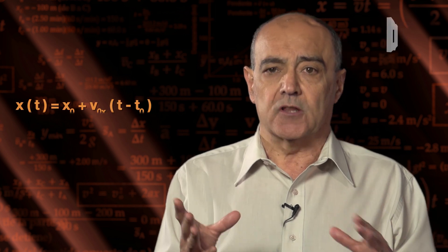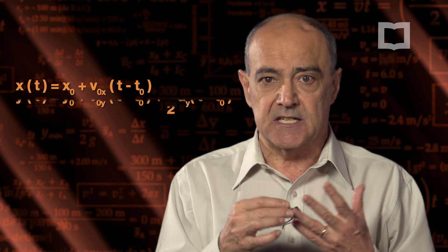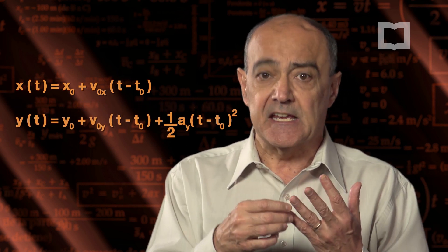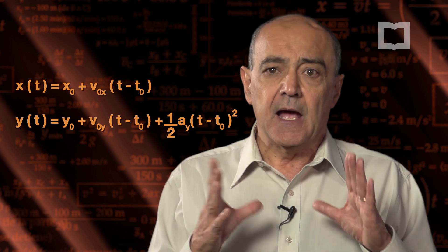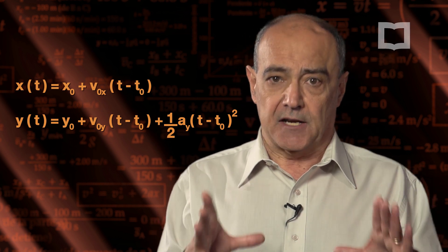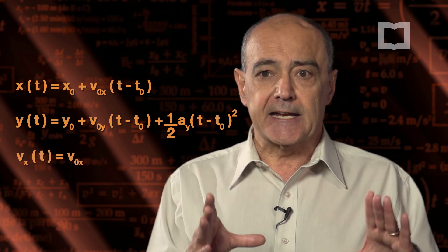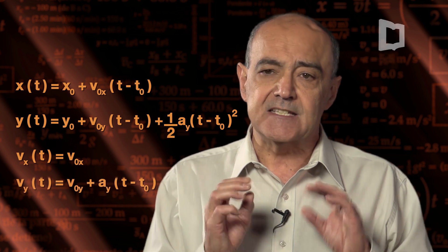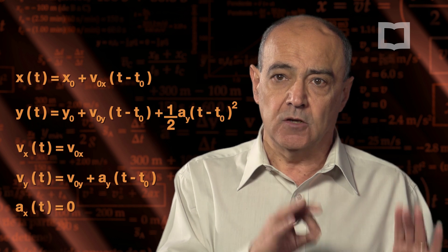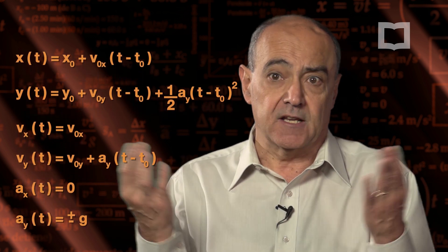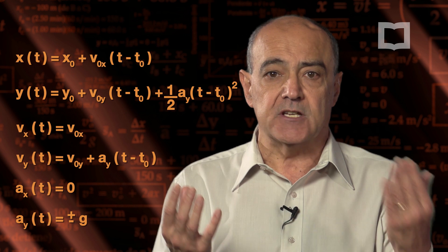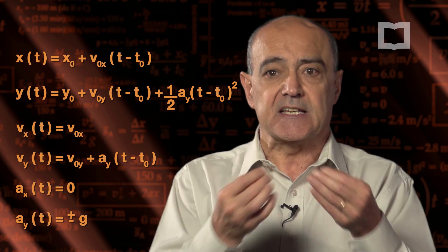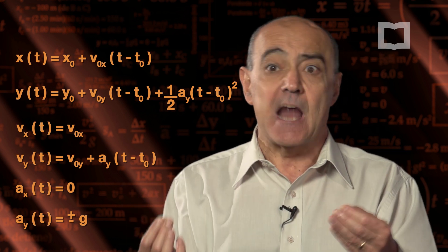Para conocer las condiciones iniciales —lo que llamamos las condiciones de borde— necesitamos conocer X₀, Y₀ (las posiciones iniciales), las componentes iniciales X e Y de la velocidad, y la aceleración, todo expresado en un sistema de referencia. Los sistemas de referencia son arbitrarios, los elige quien va a resolver el problema. Necesitamos un sistema de referencia para la posición y uno para el tiempo, porque describir el movimiento significa conocer X e Y en función de T.